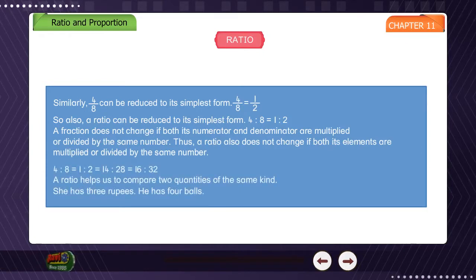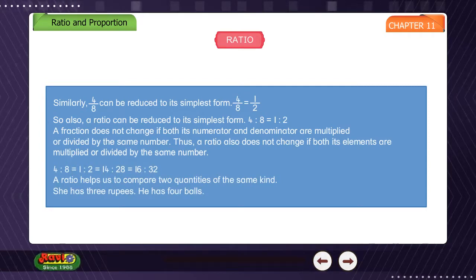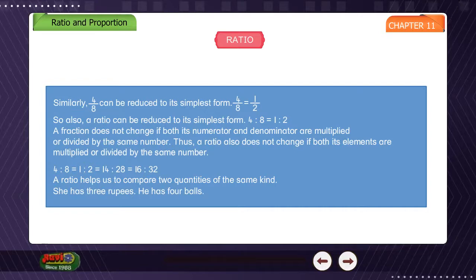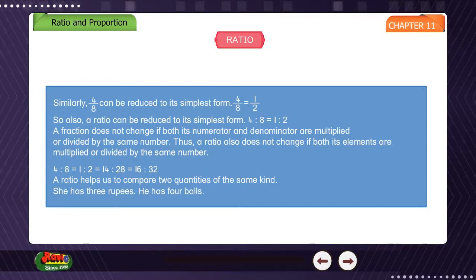4 is to 8 is equal to 1 is to 2 is equal to 14 is to 28 is equal to 16 is to 32. A ratio helps us to compare two quantities of the same kind.